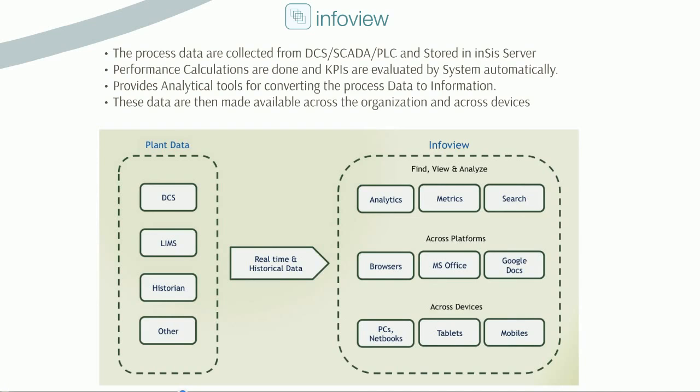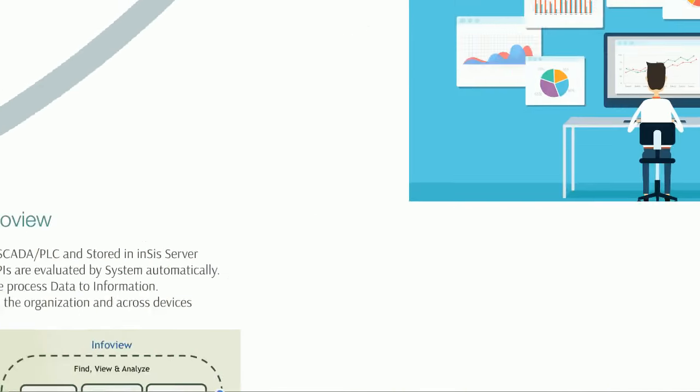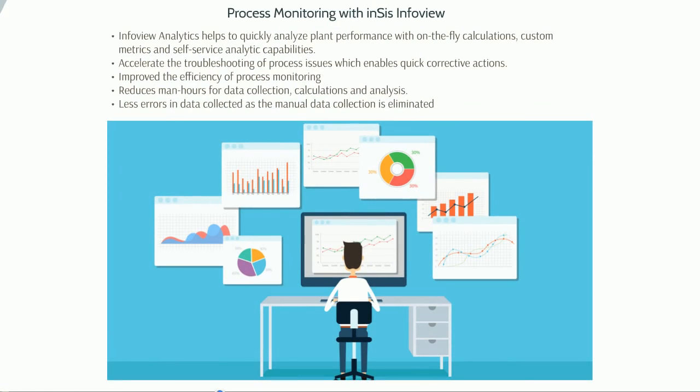This information is then made available across the organization and across devices. InfoView analytics helps to quickly analyze plant performance with on-the-fly calculations, custom metrics, and self-service analytic capabilities. It accelerates the troubleshooting of process issues, which enables quick corrective actions.